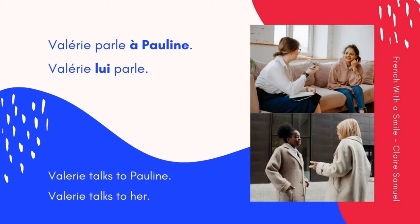We also have 'parler à' — to speak to somebody, parler à quelqu'un. Valérie parle à Pauline. There's 'à', and Pauline is feminine, so I'm going to use 'lui'. Same thing: 'à' and a woman, 'à' and a man — it's going to become 'lui'. Valérie lui parle. 'Lui' stands for à Pauline. Let's repeat: Valérie parle à Pauline → Valérie lui parle.